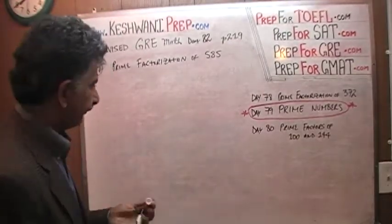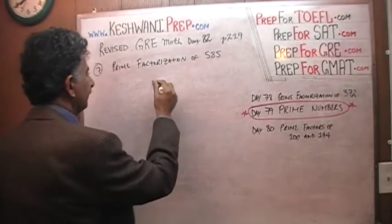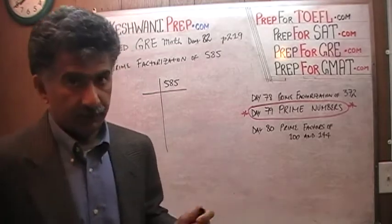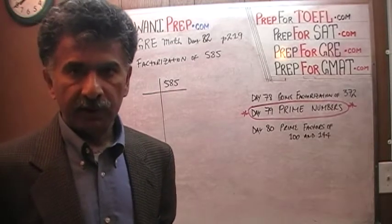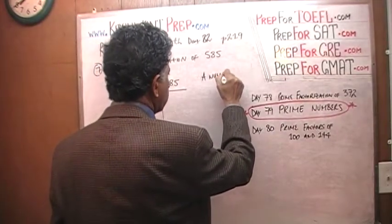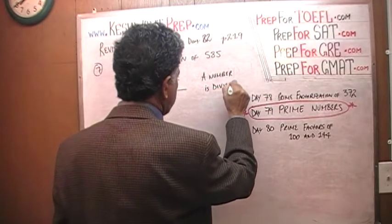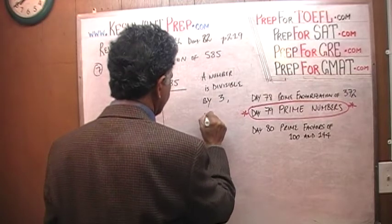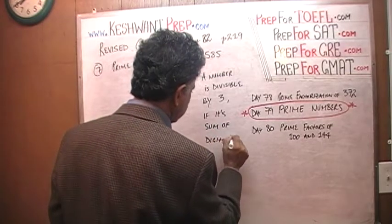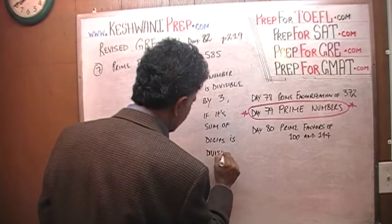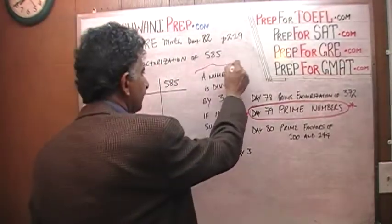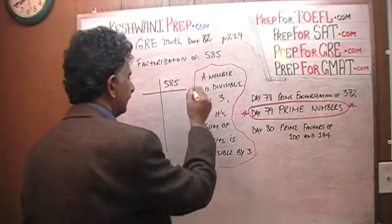Let's start. So what we do is we take our 585 and we start dividing it by the lowest possible number that we can think of, other than 1 obviously. We can't divide 585 by 2 because it is not an even number. Let's see if it is divisible by 3. And if you remember the rule: a number is divisible by 3 if its sum of the digits is divisible by 3. That is the rule. You add up the digits of the number, and if it is divisible by 3, then the number is divisible by 3.